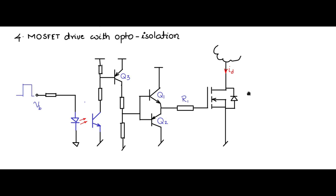So when VB is low, MOSFET is off. When VB is high, there is a drive current flowing through the diode and the diode emits light, and the optocoupler transistor is on. There is a drive current here — Q3 is on, Q3 allows drive current to flow through in this path to Q1, Q1 is on, and there is a drive current to charge up the capacitance of the MOSFET and the MOSFET turns on.